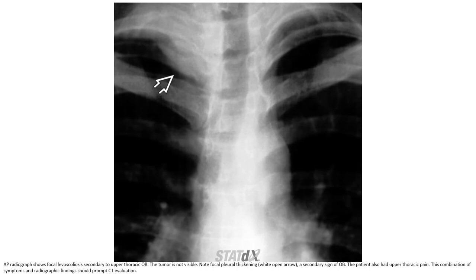Radiographs show focal level sclerosis secondary to upper thoracic lesion. The tumor shows no focal pleural thickening, and secondary signs are also positive. The patient had upper thorax pain; it is a combination of symptom and radiograph findings prompting CT evaluation.